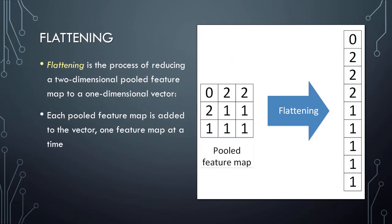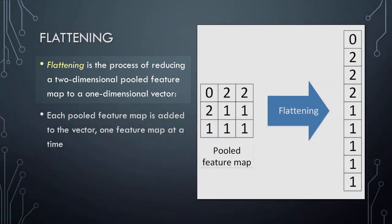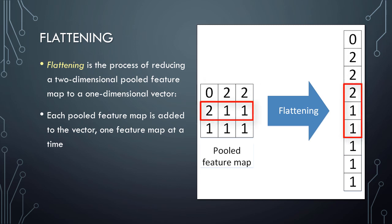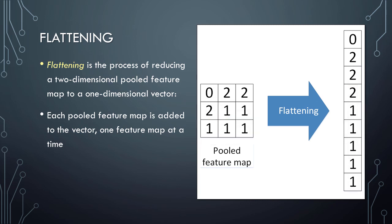Next, let's talk about flattening. Flattening is a very straightforward process whose goal is to reduce a two-dimensional pooled feature map to a one-dimensional vector. This is accomplished simply by taking each row in the pooled feature map and using it to construct our vector, one row at a time. We will typically have multiple pooled feature maps, and each pooled feature map is added to our vector one feature map at a time. The final result is a single vector that contains all of the values from all of the pooled feature maps.